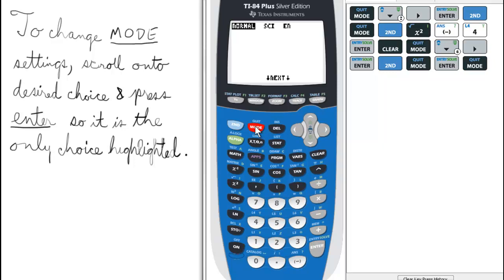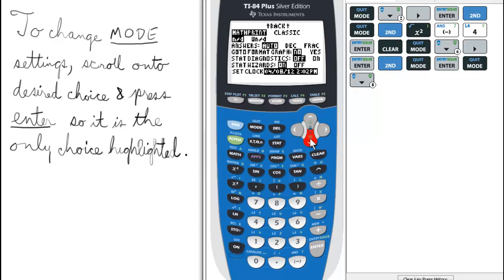One last thing about mode: it has two pages of mode. So to get the second page, we can either scroll all the way down or actually scroll up. And these are the default settings on the second page.